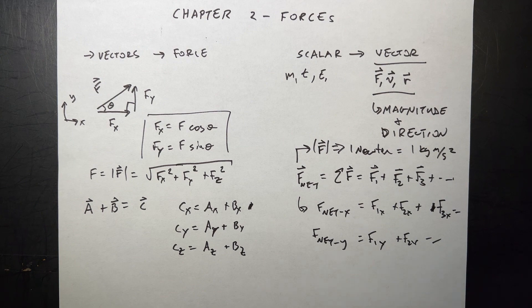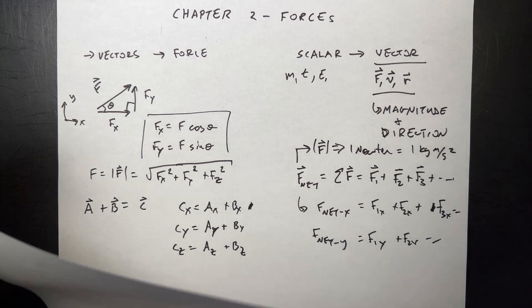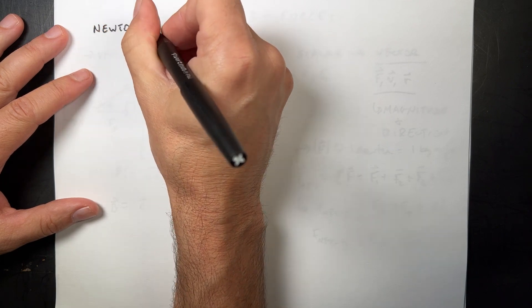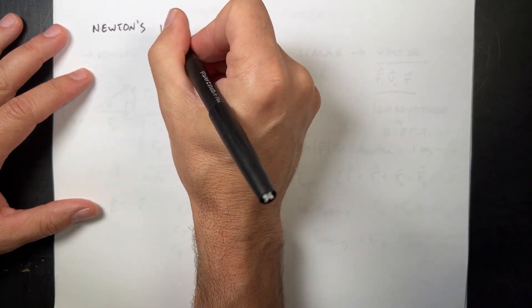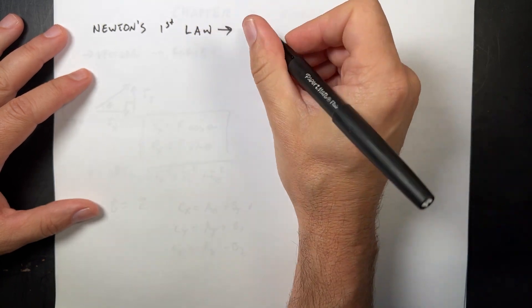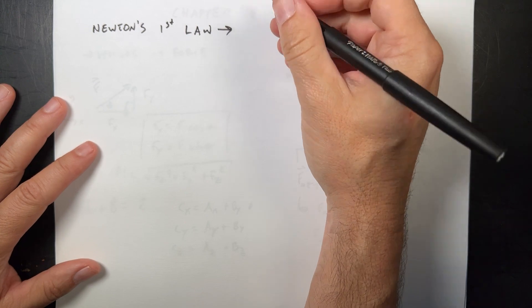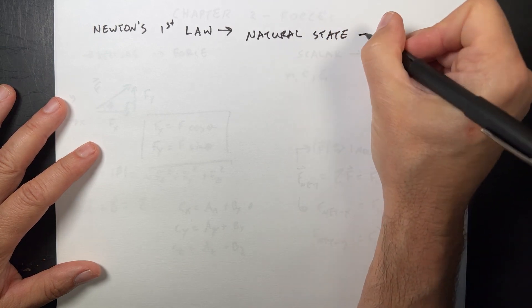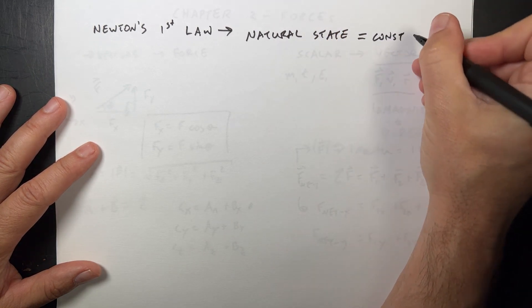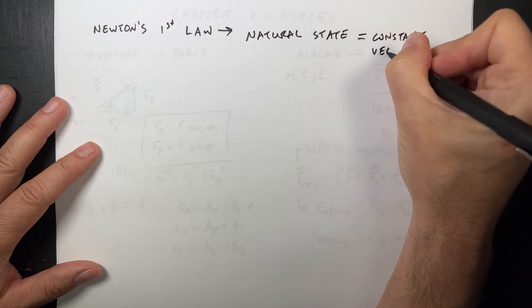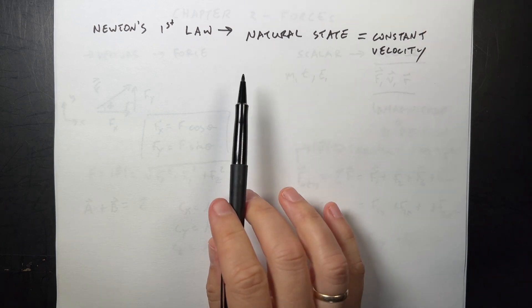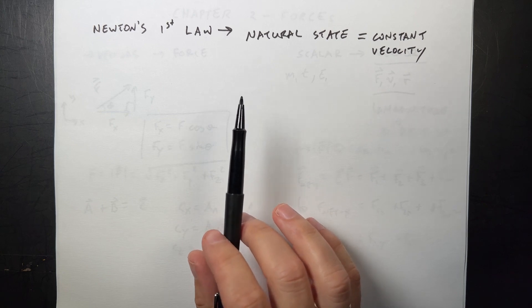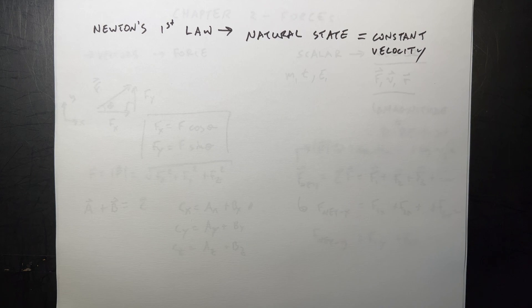Newton's first law is not really that big of a deal. I'm going to write it the way I think is best: the natural state of an object is constant velocity. That means forces change the motion of an object. You can say an object will remain at rest or remain moving in a straight line unless acted on by a force.